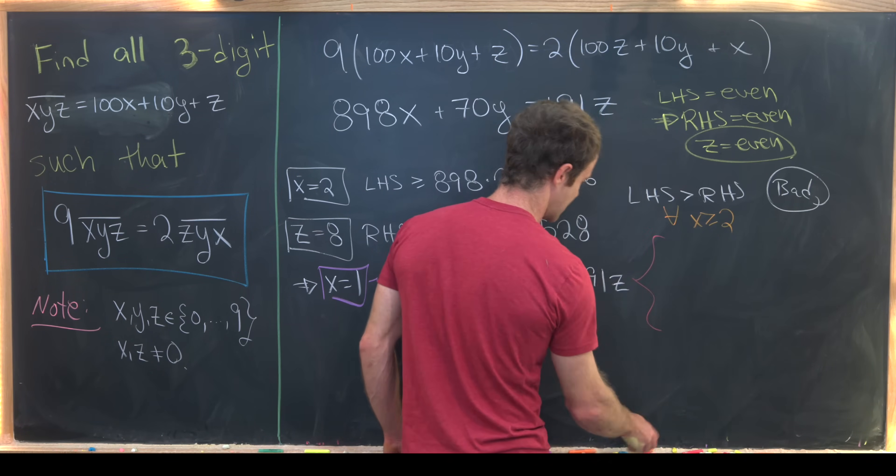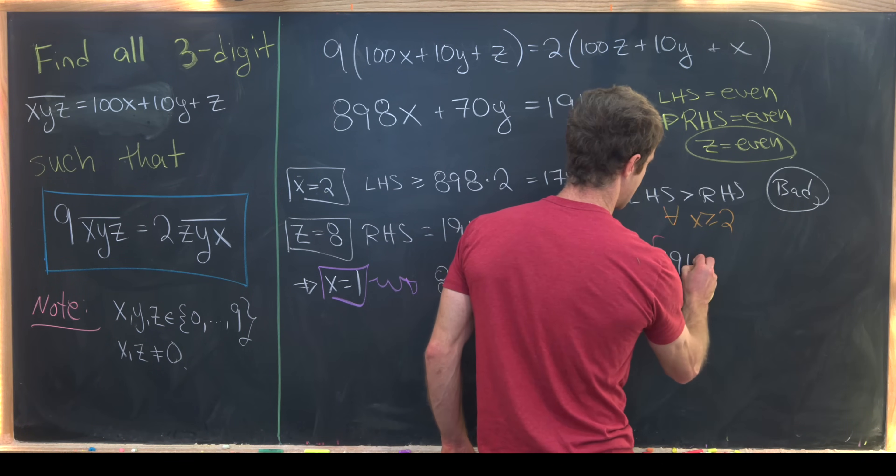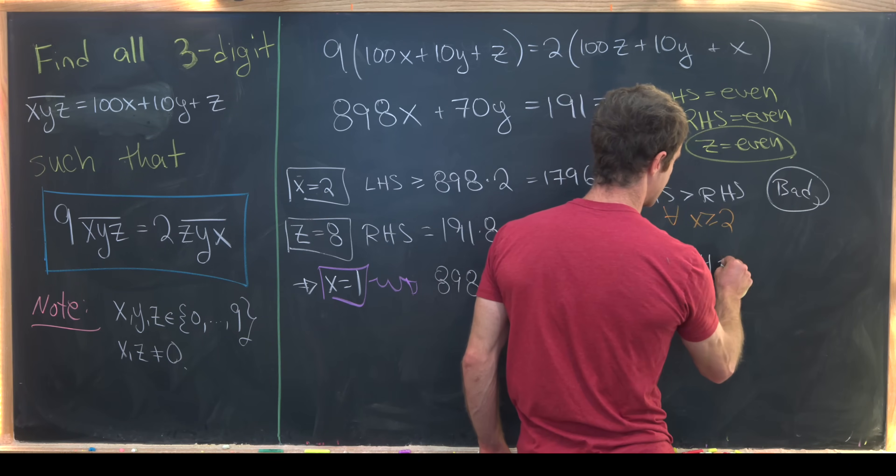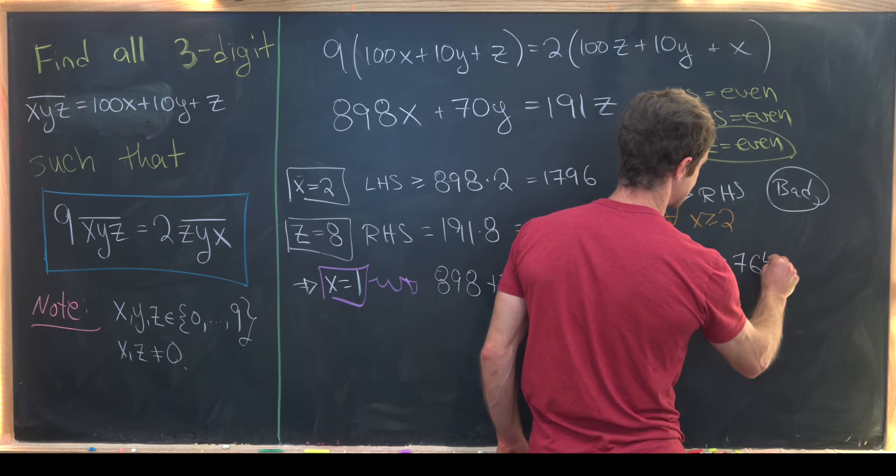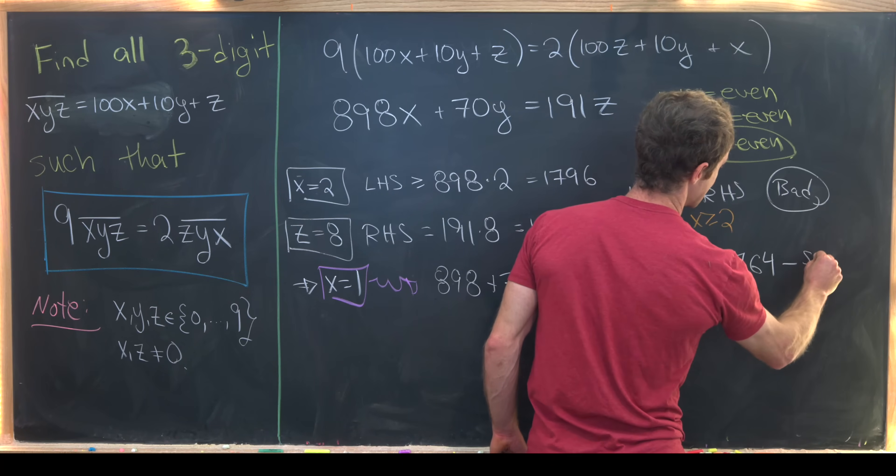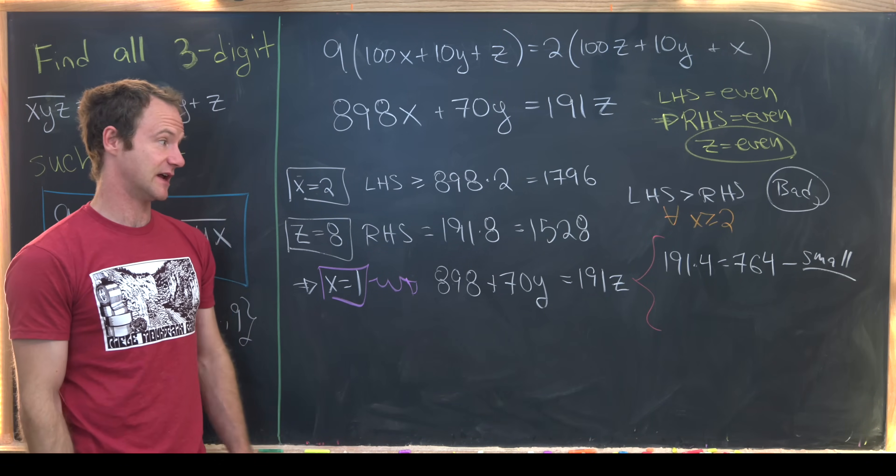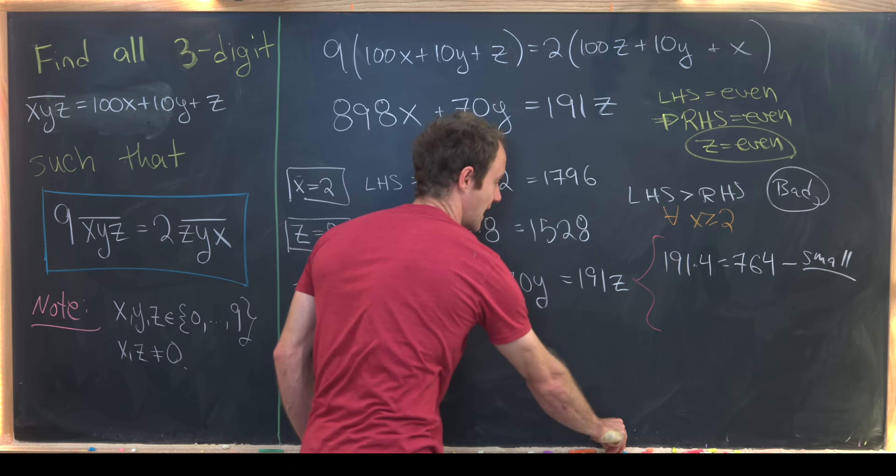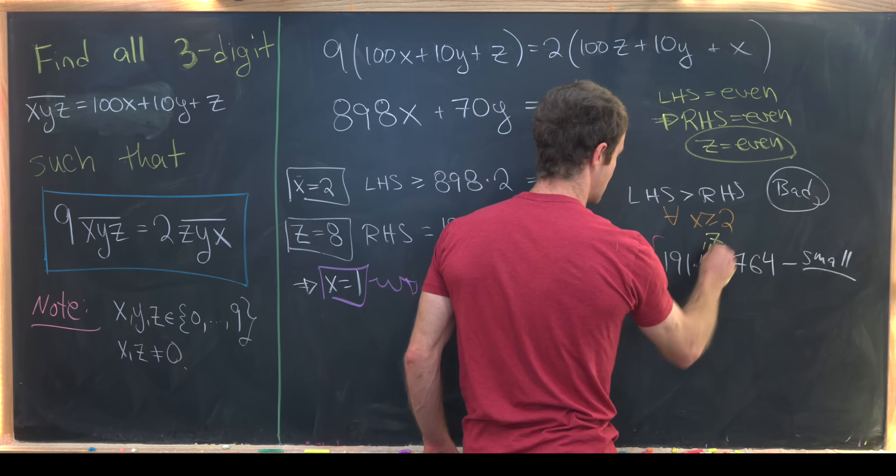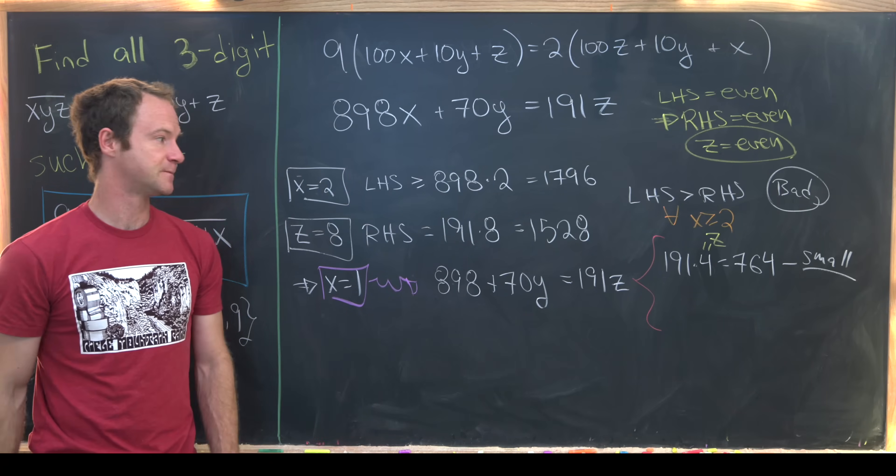Well you can check really quick that 191 times 4 is indeed equal to 764. Notice that is too small. That's less than 898. And that would be like the z equals 4 case. So let's see.